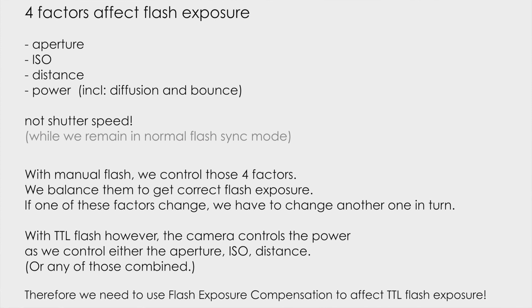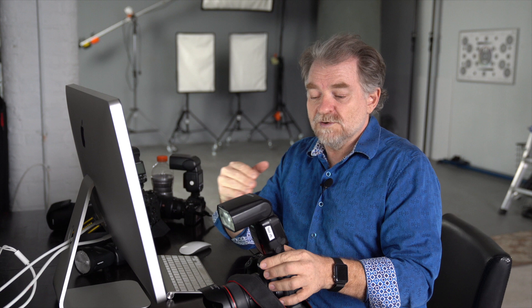With TTL flash, however, the camera controls the power as we change aperture, ISO, or distance. Therefore we need to use flash exposure compensation to affect our TTL flash exposure. With TTL flash, you can change your aperture and the flash exposure will follow — the camera and flash work together to dump more or less light for consistent exposure. With manual flash, your exposure would change. That's a big difference between TTL and manual.